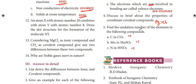Find the oxidation number of elements in the following compounds: Carbon in CO2 — oxidation number is +4. Mn in MnSO4 — oxidation state is +2. Nitrogen in HNO3 — nitrogen's oxidation number is +5.